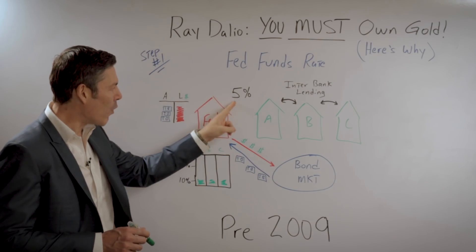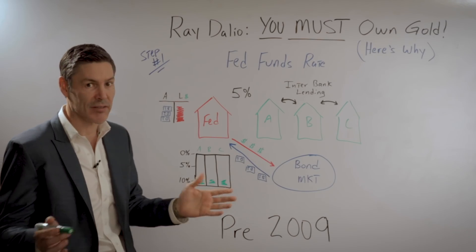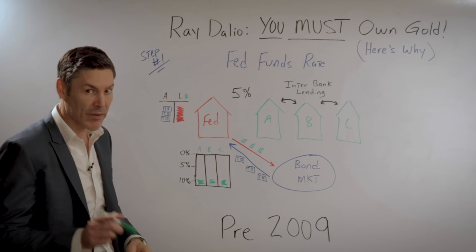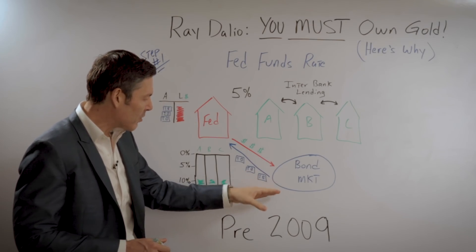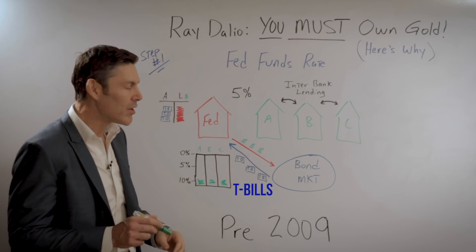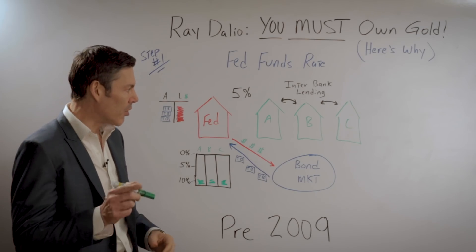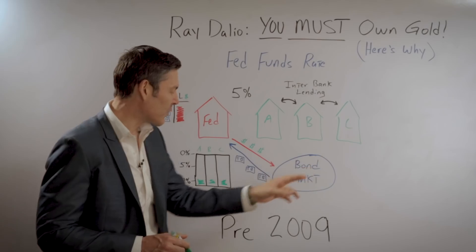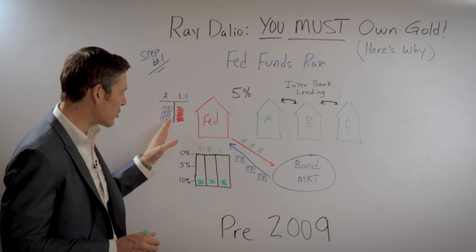If the Fed wants the Fed funds rate at 5% instead of 10%, all they do is print money out of nowhere — and that definitely hasn't changed. They go into the bond market to buy short-term treasuries, T-bills. Who is selling those T-bills? Most likely that would be banks A, B, and C. So the Fed takes those T-bills and puts them onto their balance sheet.